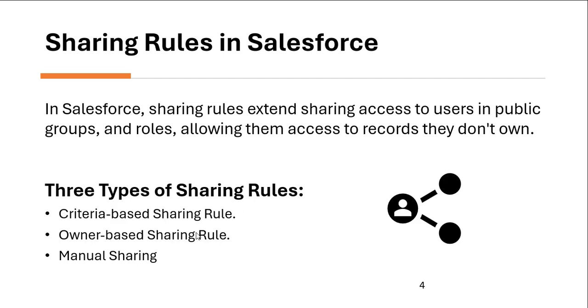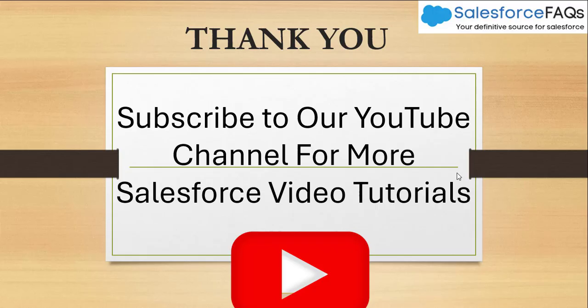In this video we have seen the types of sharing rules: criteria-based sharing rule, owner-based sharing rule, and manual sharing. We have seen the differences between all of them and why manual sharing is different from criteria-based and owner-based sharing rules. I hope you have got an idea about record level security — in the previous video we saw OWD and roles, and in this video we saw sharing rules and manual sharing in Salesforce. If you liked the video, hit the like button, subscribe to our channel, and hit the bell icon to get regular updates. Thank you.